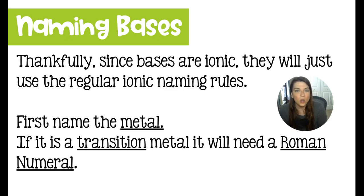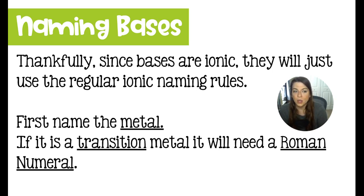We know that bases are ionic, so that makes this naming very easy, which is fantastic for us because who needs another naming system? All of these things are just going to be ionic and they're bonded to hydroxide. So you name it the same way you name ionic compounds — I will link that video in the description. You're going to name the metal, and then just remember that if it's a transition metal, it may require a Roman numeral. So be on the lookout for that.